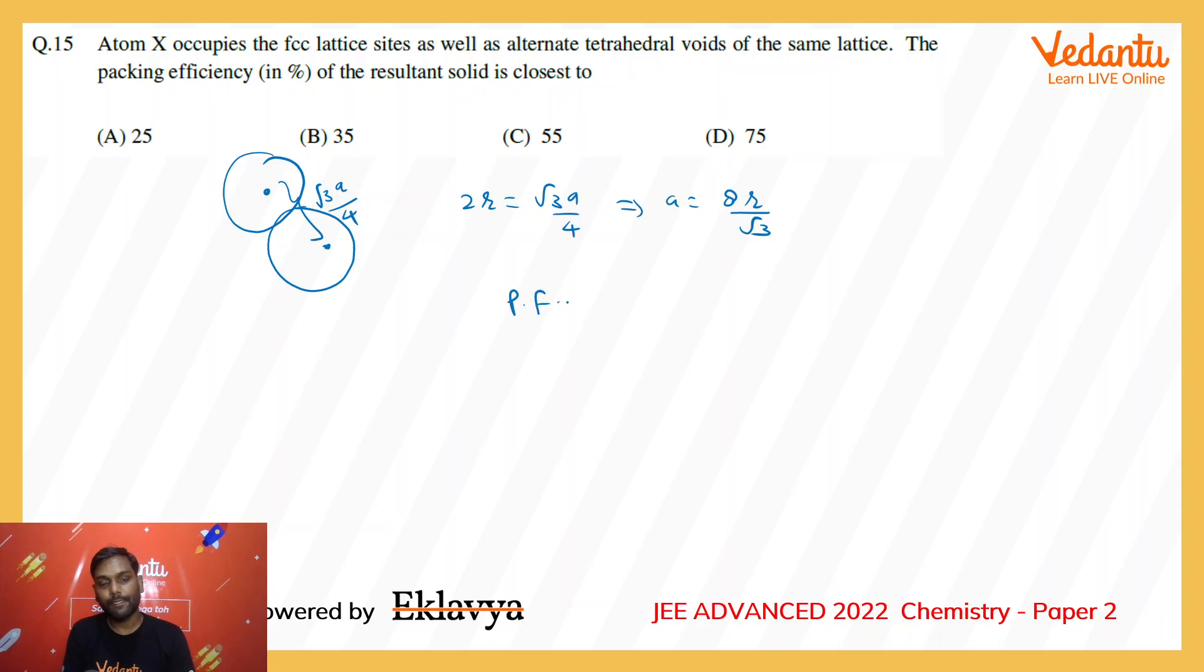Now the packing fraction is volume occupied by atoms divided by the volume of the unit cell. There are total eight atoms in the unit cell.